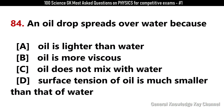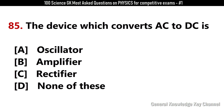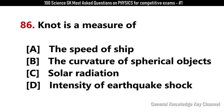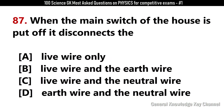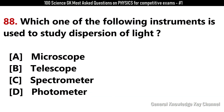An oil drop stretches over water because? Answer D: The surface tension of oil is much smaller than that of water. The device which converts AC to DC is? Answer C: Rectifier. Knot is a measure of? Answer A: The speed of a ship. When the main switch of the house is put off, it disconnects the? Answer C: Live wire and neutral wire. Which instrument is used to study the dispersion of light? Answer C: Spectrometer.